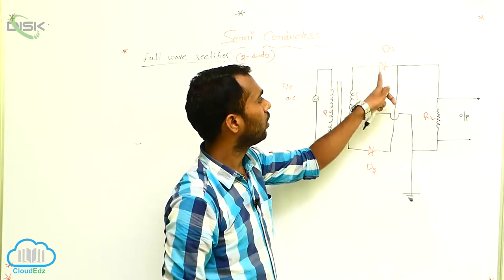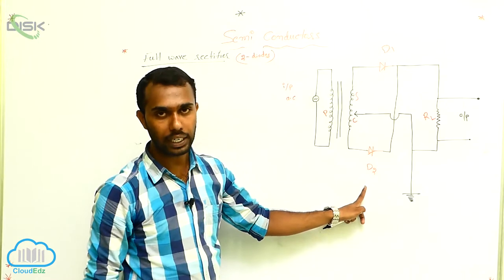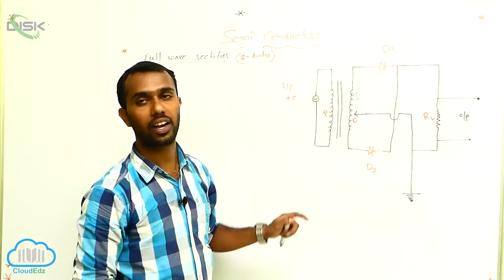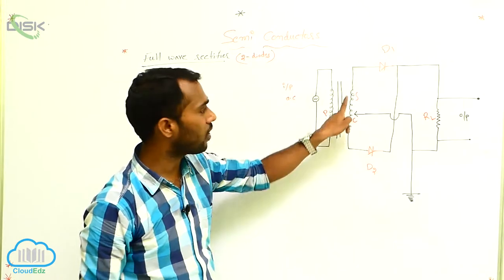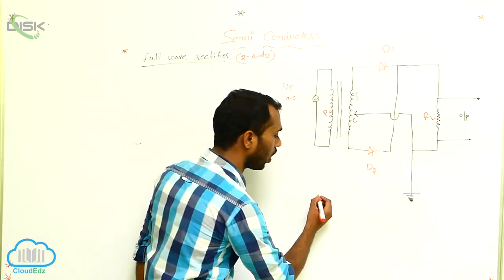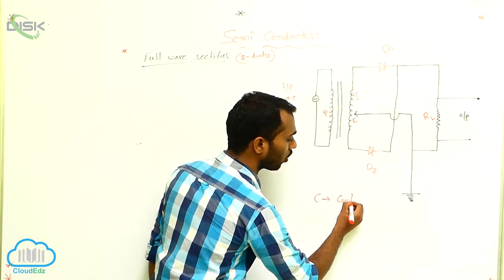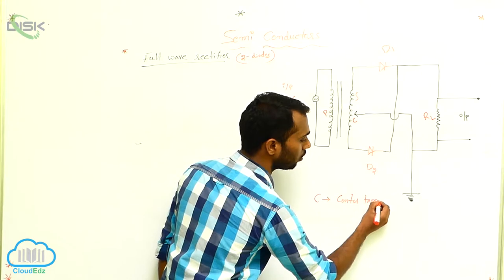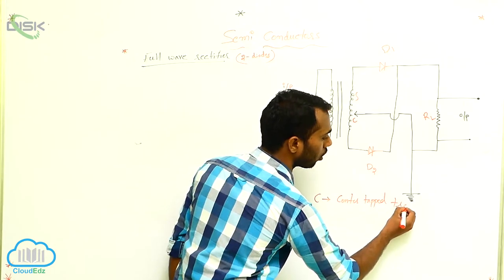This resistor has a name — it is called the load resistor. This circuit gives some load to that resistor, that's why it is called a load resistor. It has diode D1 and diode D2. P is the primary coil, S is the secondary coil, and C is the center tapped transformer.